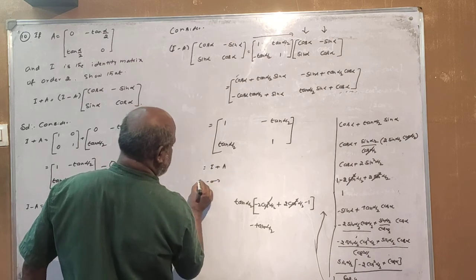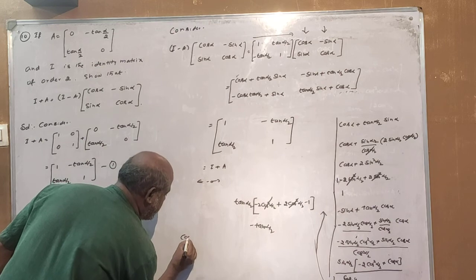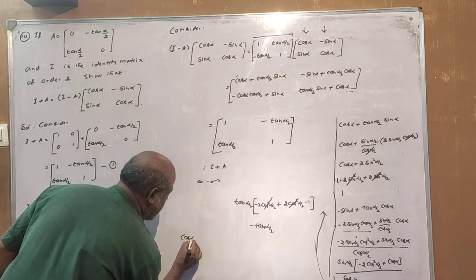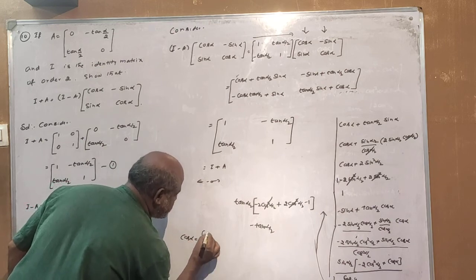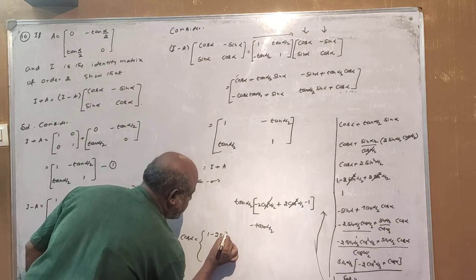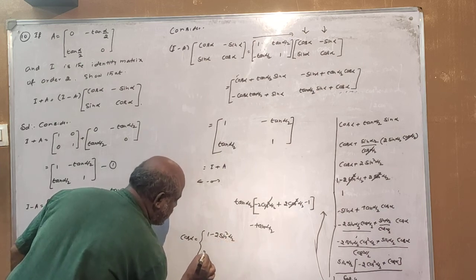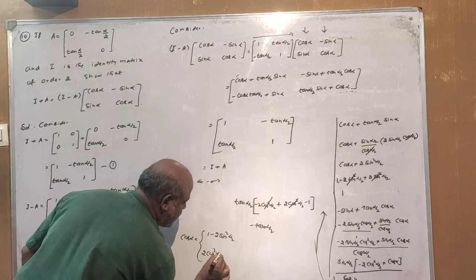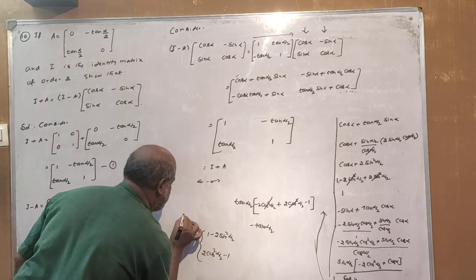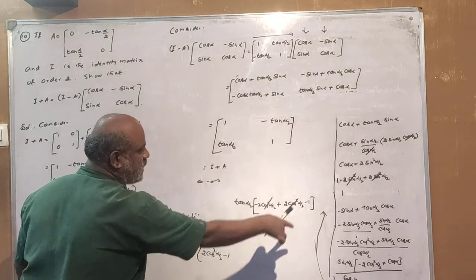That's all. This formula is very important. cos(α) in terms of sin is 2sin²(α/2). In terms of cos(α) it is 2cos²(α/2) minus 1. This formula is universal.